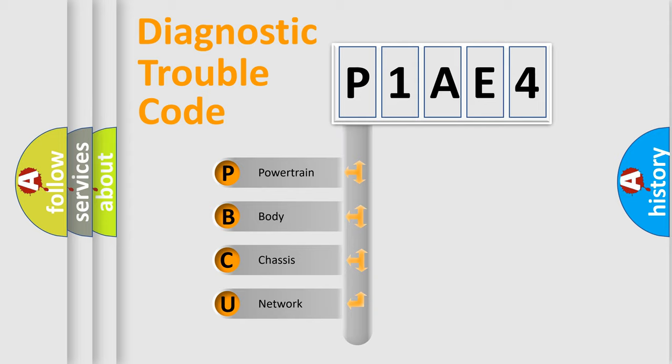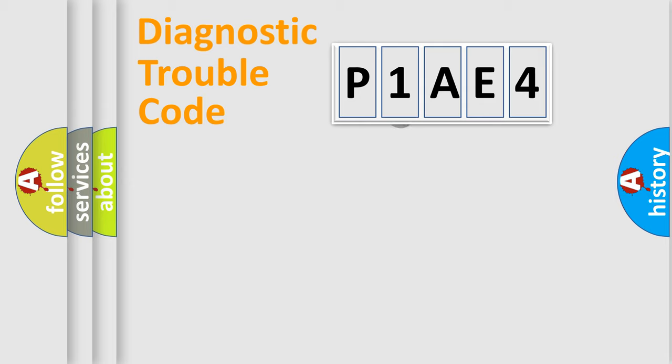We divide the electric system of automobile into four basic units: Powertrain, Body, Chassis, Network. This distribution is defined in the first character code.